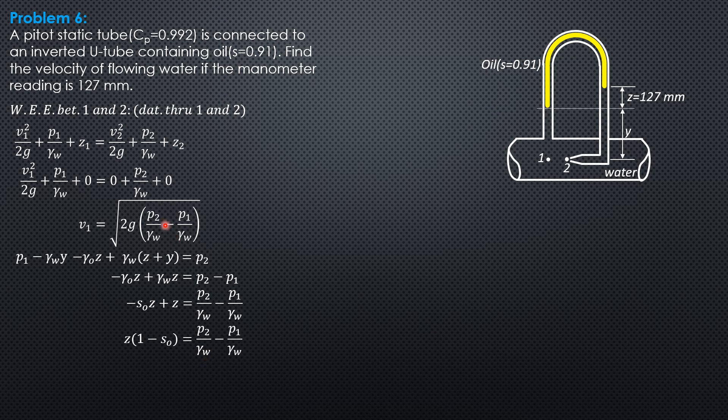So we now have v₁ equals square root of 2gz(1 minus S₀). The corrected velocity v is Cᵥ times v₁, which is Cᵥ times square root of 2gz(1 minus S₀).